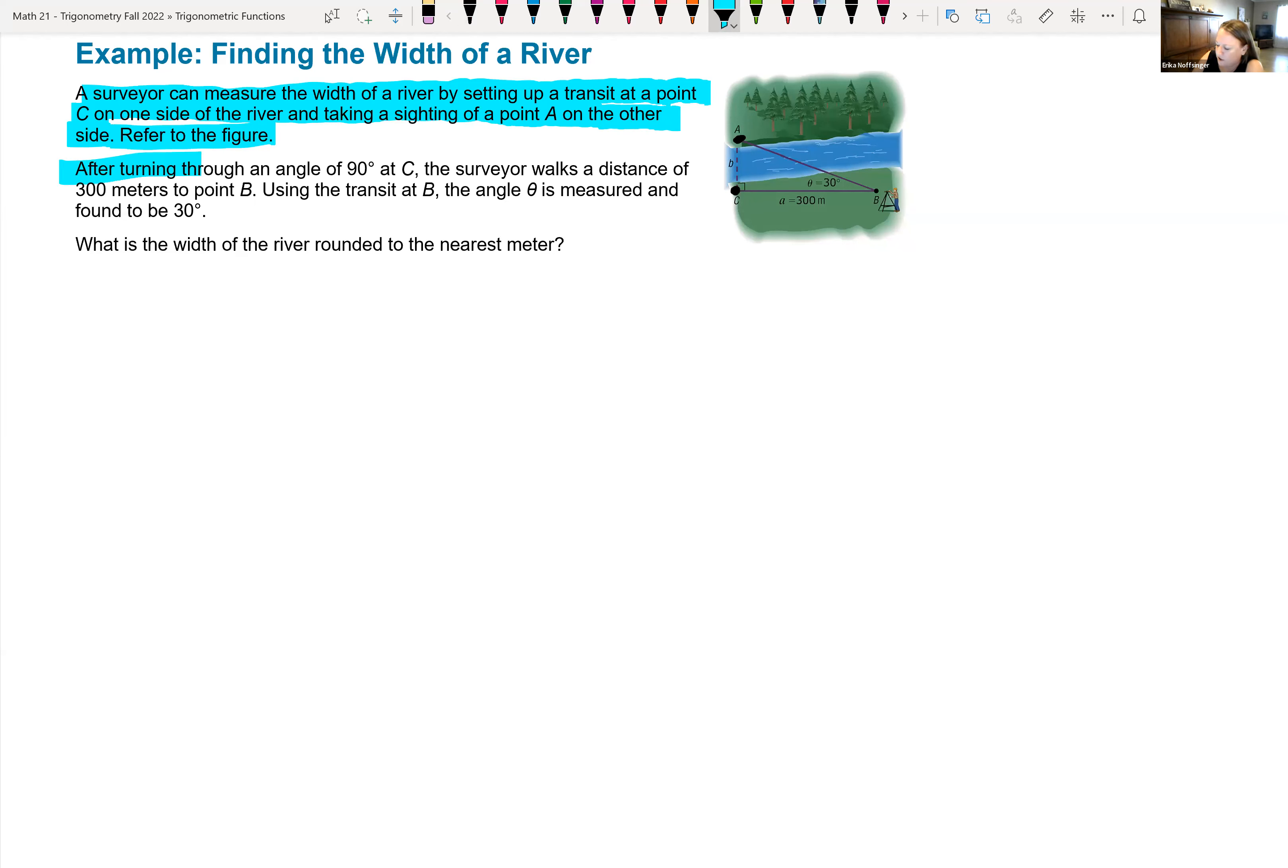Then it states that after turning through an angle of 90 degrees at C, the surveyor walks a distance of 300 meters to point B. Using the transit at B, the angle theta is measured and found to be 30 degrees. So, what is the width of the river rounded to the nearest meter?